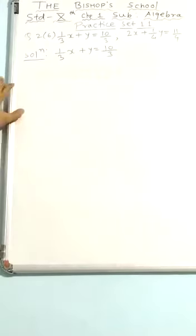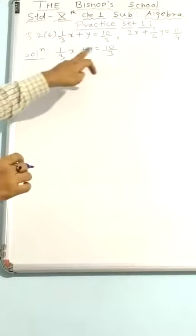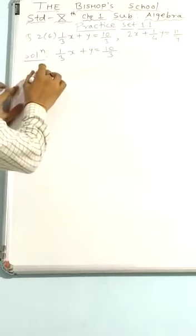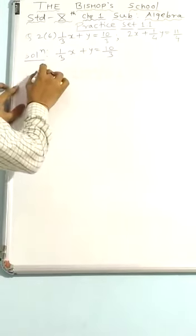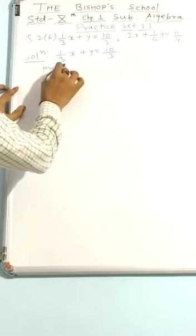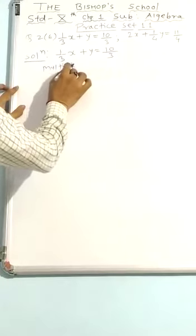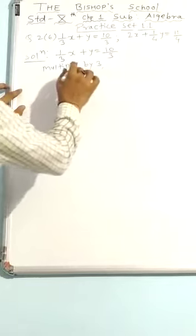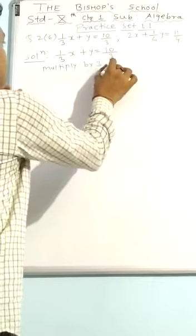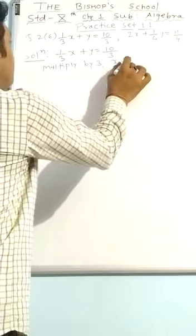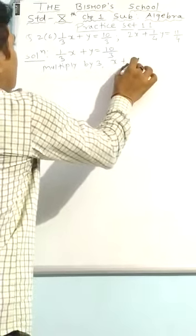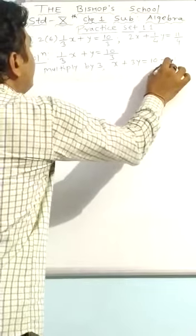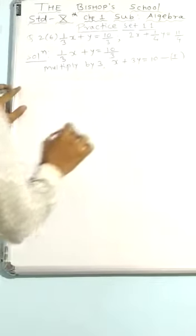I will multiply this equation by 3 in order to remove the denominator. So multiplying by 3, we have x plus 3y equal to 10. I am keeping this as equation number 1.